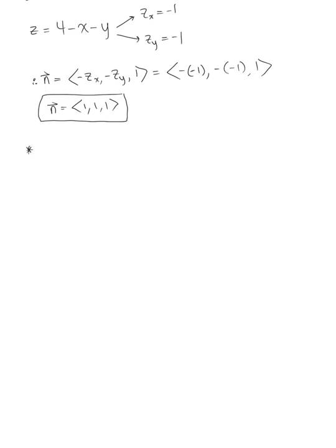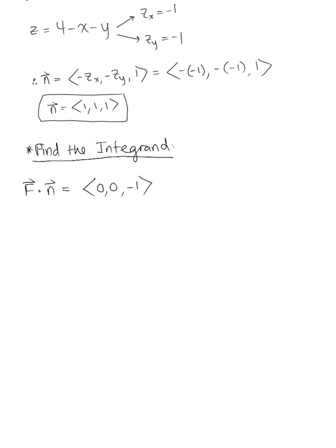Now we compute the dot product of our vector field with the normal vector to find the integrand. Our vector field was given as F = (0, 0, -1), and we dot this with the normal vector (1, 1, 1). Applying the dot product: 0 + 0 + (-1) = -1. So our integrand is -1.